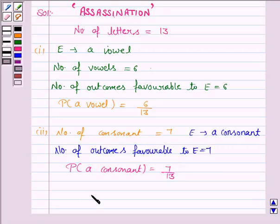So the probability of getting a vowel is 6 by 13 and the probability of choosing a consonant is 7 by 13. And this completes the question. Bye for now, take care, have a good day.